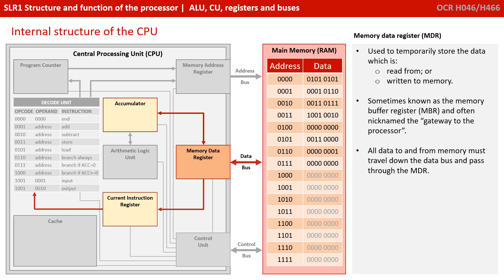The memory data register is used to temporarily store any data which is read from or is about to be written to main memory. It's sometimes referred to as the memory buffer register and is nicknamed the gateway to the processor, because all data which is going to be written to or read from memory must first pass through the memory data register.